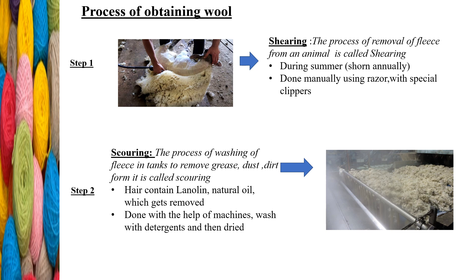After shearing, the removed fleece is sent for the second step — scouring. Scouring is the process of washing the fleece in tanks to remove grease, dust, and dirt. The fleece is thoroughly cleaned by washing with soap or detergent and lots of water. The hair contains lanolin, a natural oil, which also gets removed during this process. Nowadays scouring is done by machines.